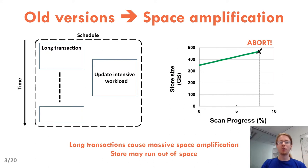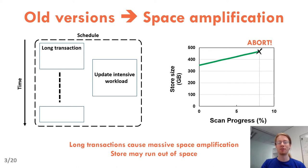The issue is that if you launch long transactions concurrently with an update-intensive workload, the store keeps multiple versions of the updated items for the duration of the long transactions. As a consequence, the size of the store grows over time — that's a phenomenon we call space amplification. For instance, we launched a scan of a store concurrently with an update-intensive workload on a half-terabyte NVMe drive, and the size of the store is shown on the graph on the right side of this slide.